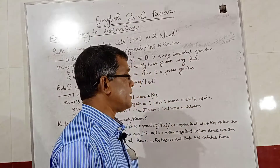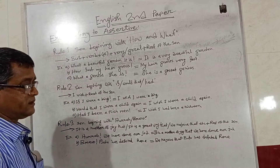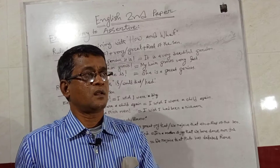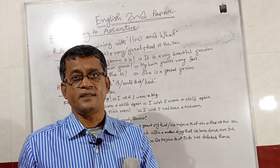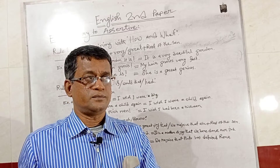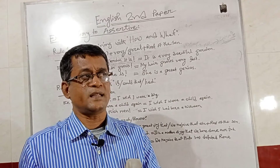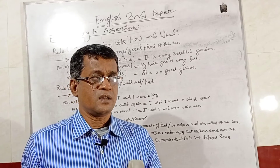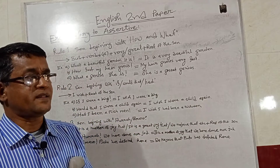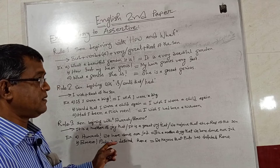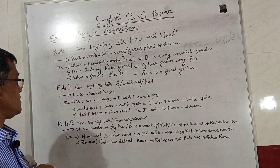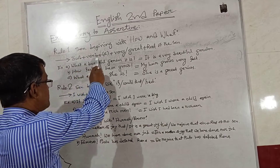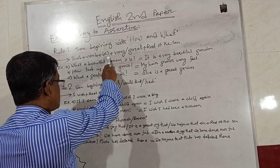Rule number one: sentences beginning with 'How' and 'What.' In the last class, we transformed Assertive sentences into Exclamatory by using 'how' and 'what' at the beginning. Today, we will have to omit that 'how' and 'what.' The rule will be as follows: first, we will write the subject, then the verb, then A.